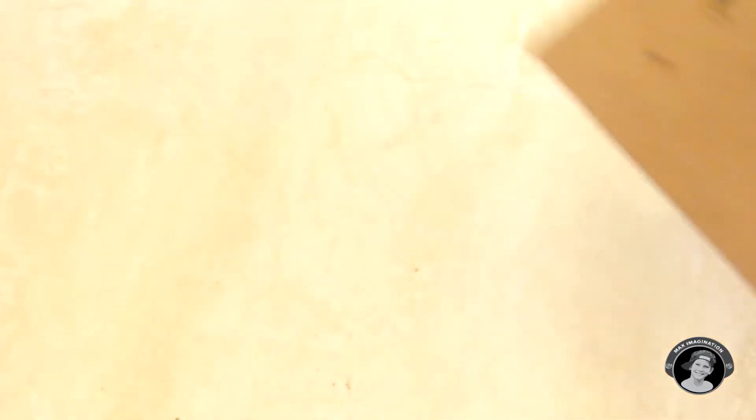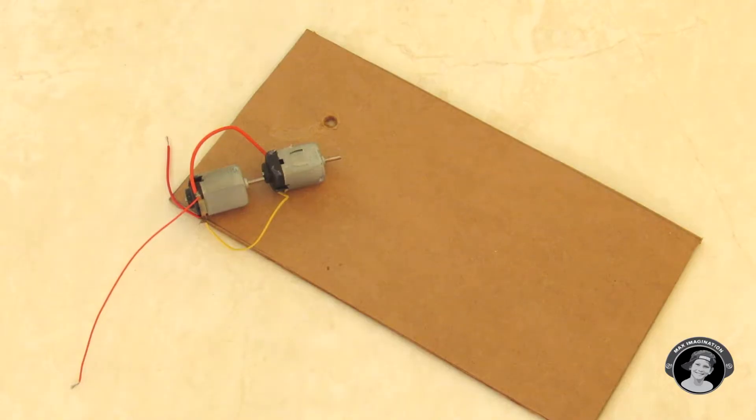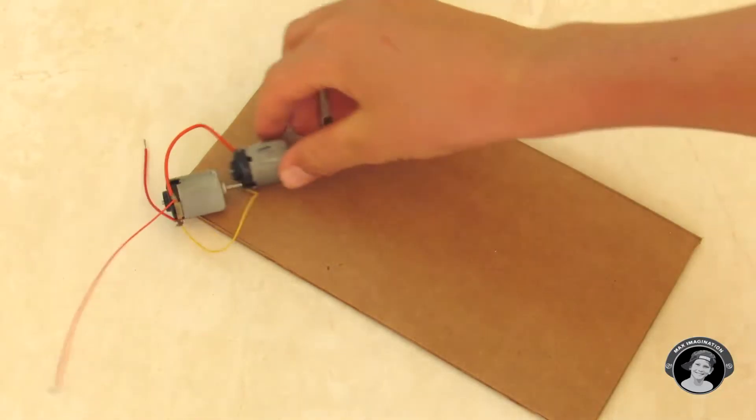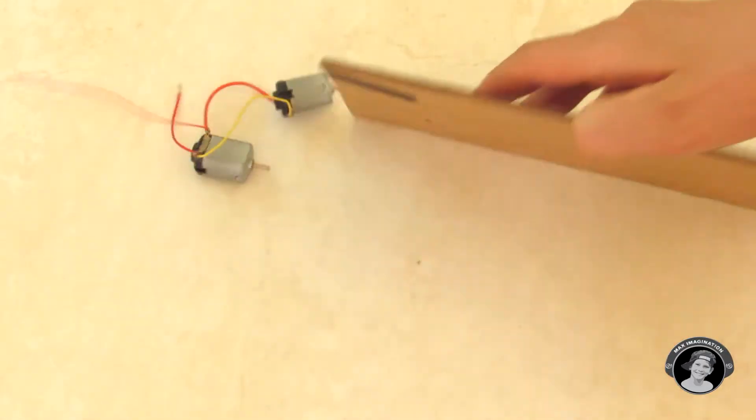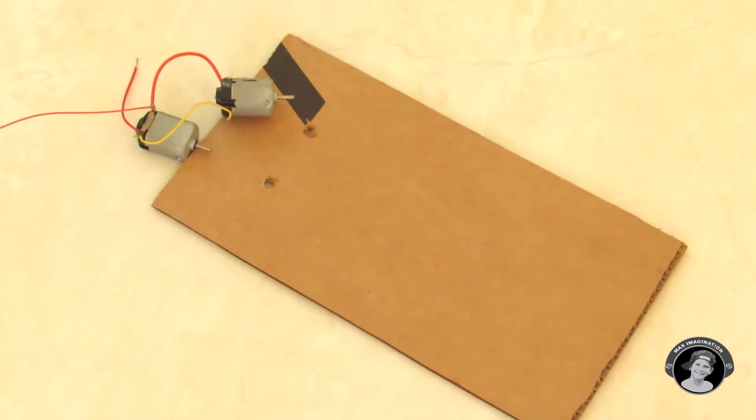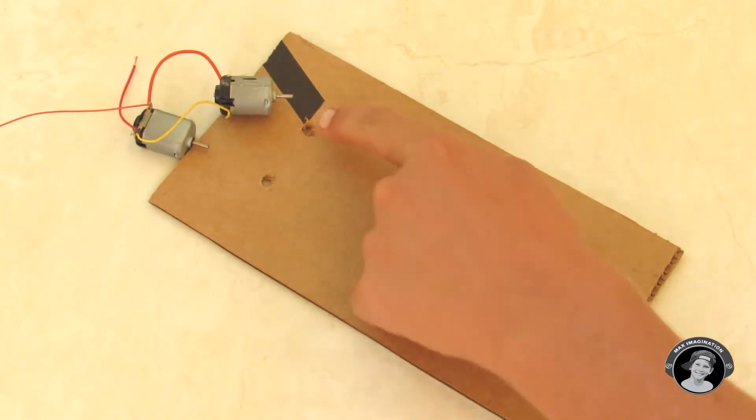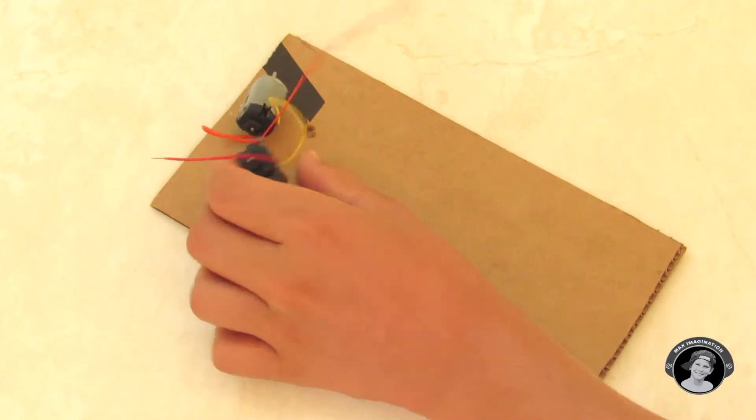So now we're going to glue these two DC motors to the holes. Flip it around, take your hot glue gun, pour some hot glue here and then put the DC motors on like that.